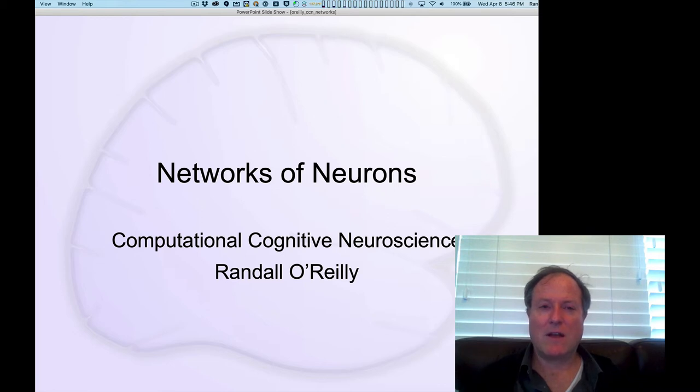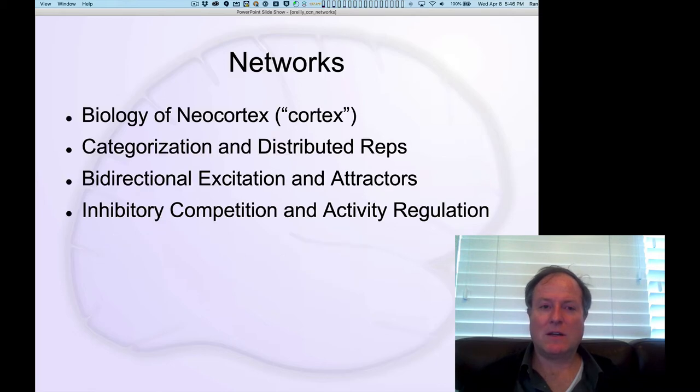We're going to start off by focusing on the biology of networks and understanding a lot more about how actual neurons in the brain are connected. Then the feed-forward flow of information we'll look at in the context of categorization and distributed representations. This picks up with the ideas of neurons as detectors and what the pandemonium model was doing.